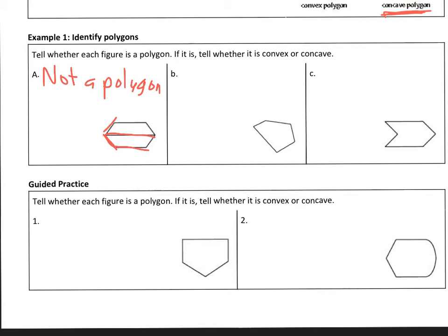In part B, this is a polygon. All the sides are line segments. All sides intersect exactly two other sides and it's closed. So that is a polygon. In this polygon, we would consider it convex. Think of there's no dent - like caved in. There's nothing caved in in this polygon. That's the best simple way I can explain that.